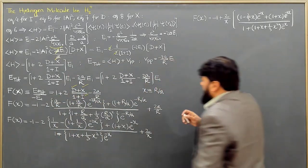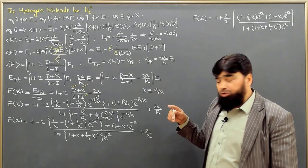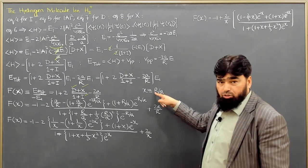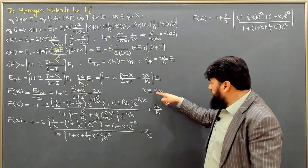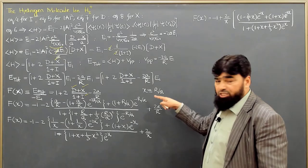Now what is x basically? What was r? r was the separation between the two protons, and it has been normalized with Bohr radius. So it is also dimensionless.